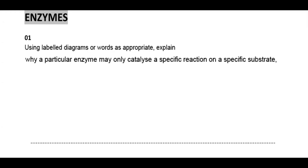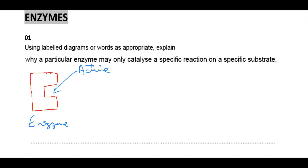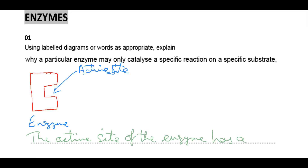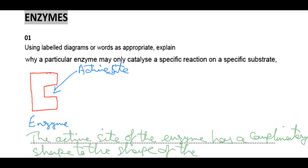We will properly label the diagram. This is our enzyme — we will label it. This is our enzyme, and this is the active site. The active site of the enzyme has a complementary shape to the shape of the substrate.